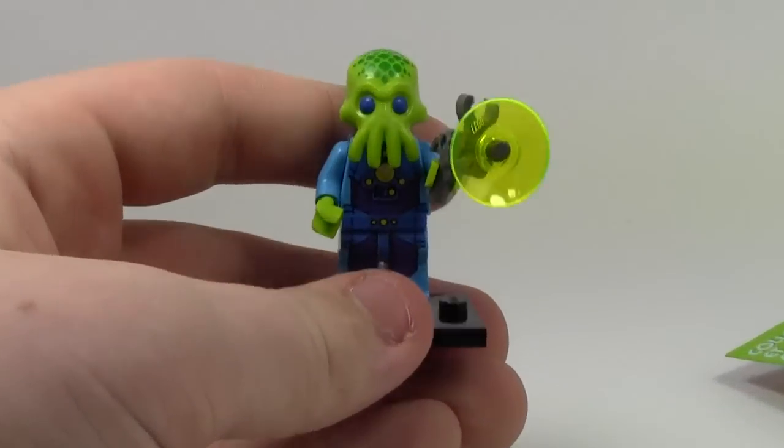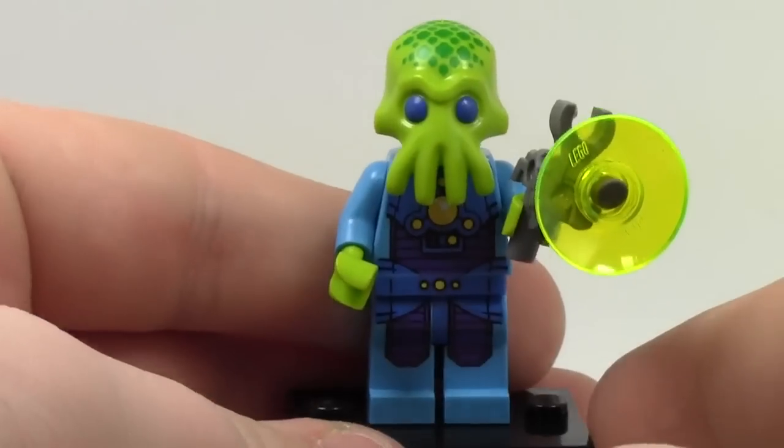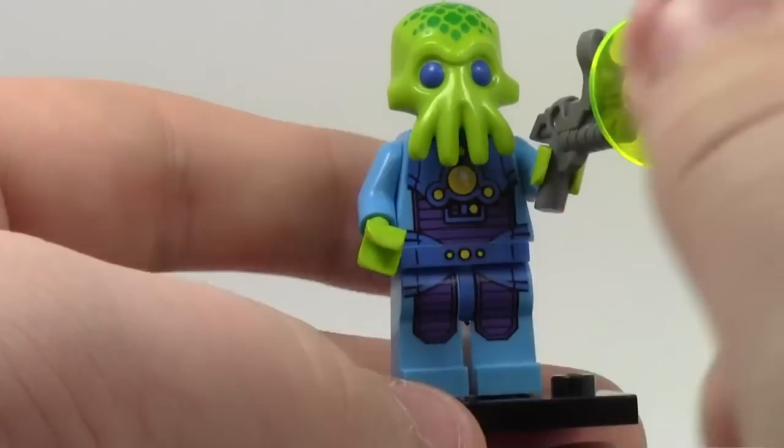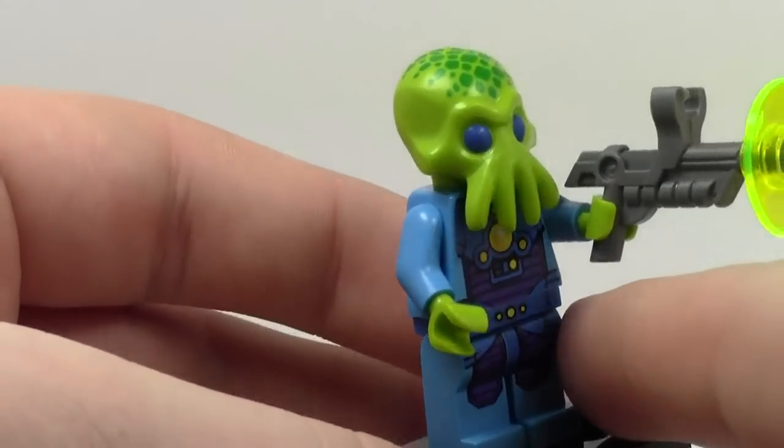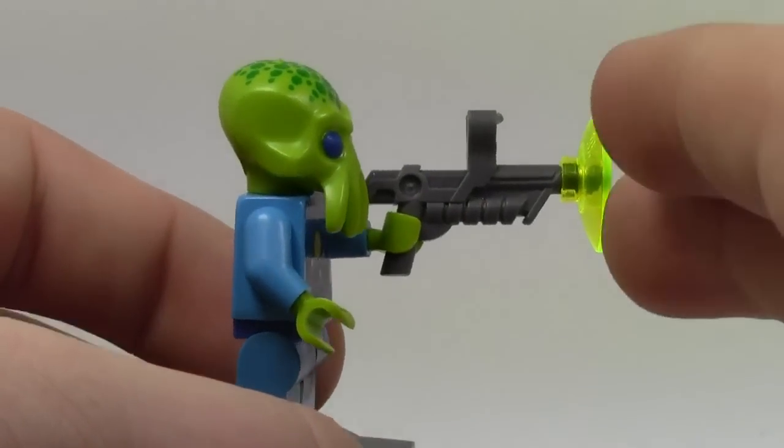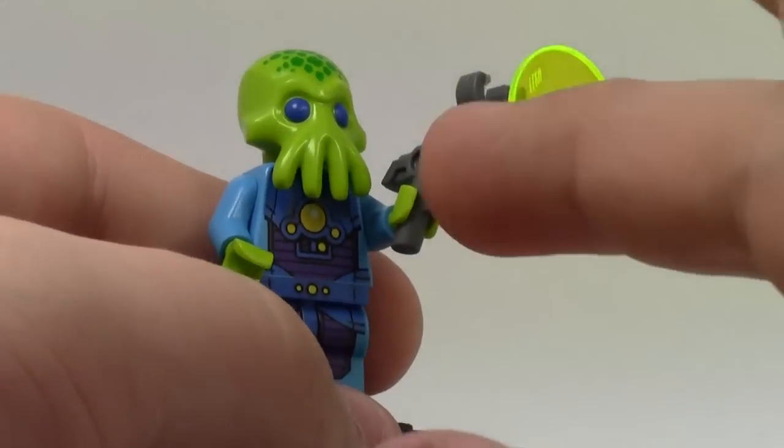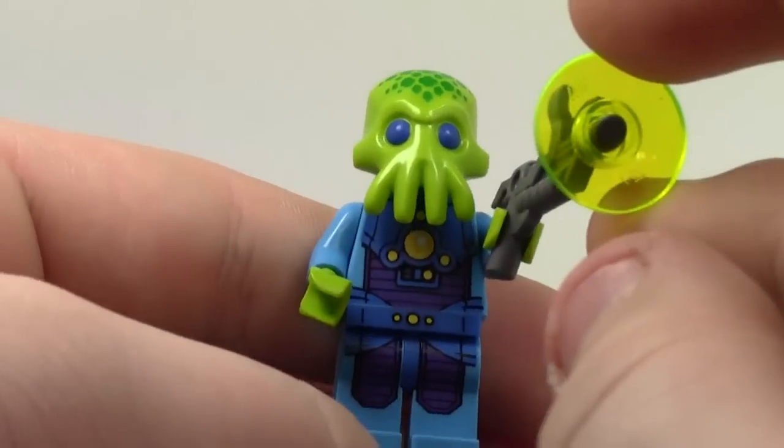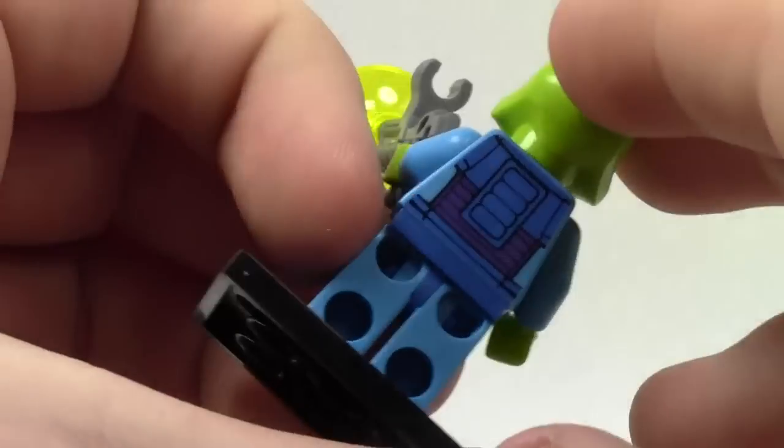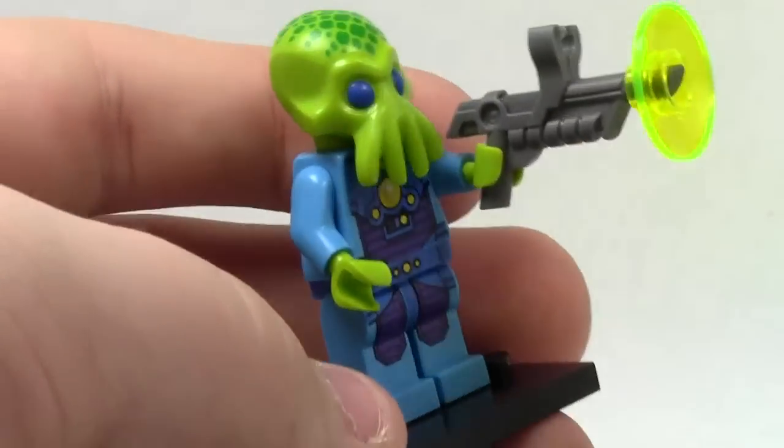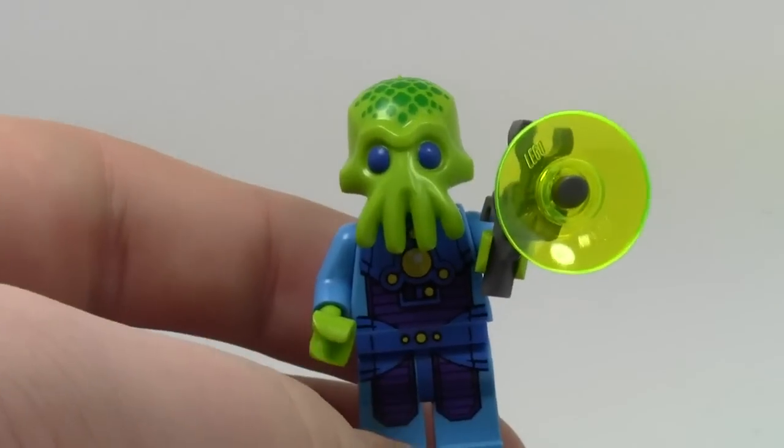He's got like a mutant face, like little tentacles, I think they're called. And he's got a ray gun with a blaster on the end. He's got really cool front printing and really cool back printing. And he's all like lime green. Very cool minifigure.